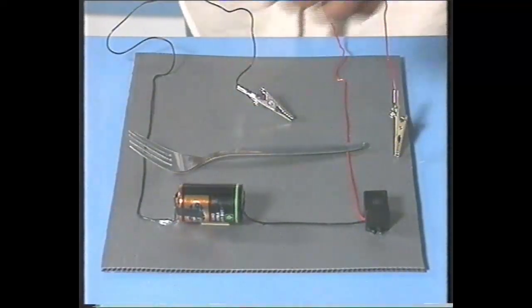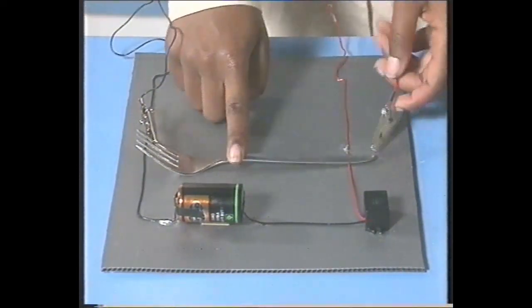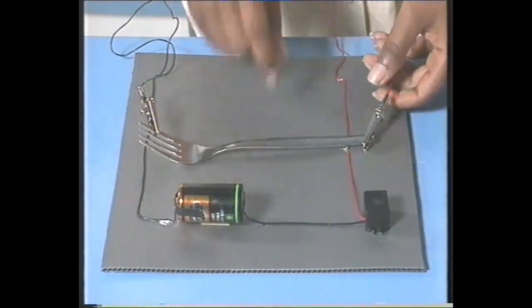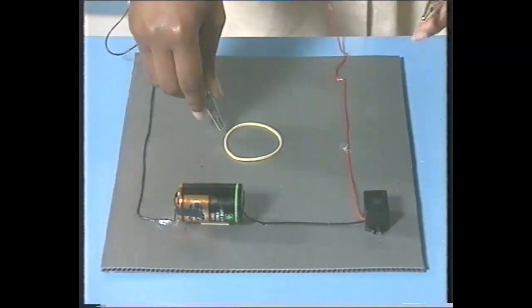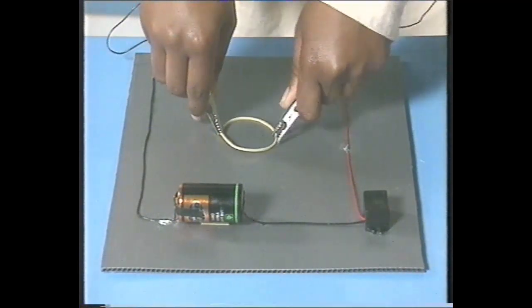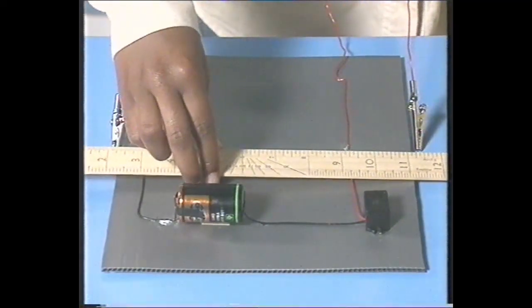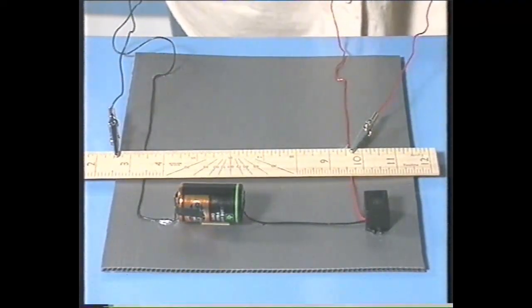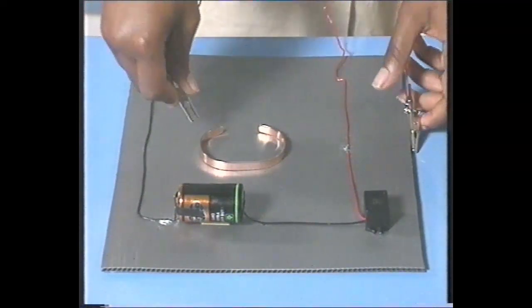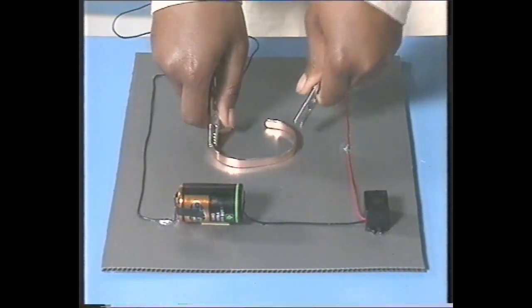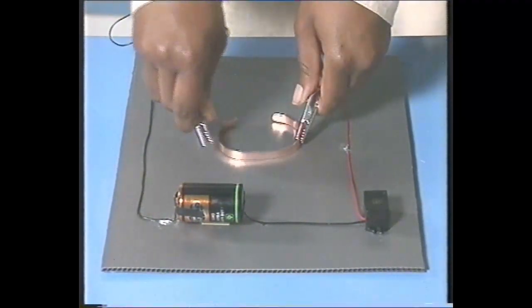Instead of touching the ends of the wire together, I was going to touch them to the ends of something else. If electricity passed through it, it would complete the circuit and make the buzzer buzz. It did when I used a fork, so I knew that the fork conducted electricity. So fork does conduct. I tried a rubber band next. I predicted that it wouldn't conduct electricity. I was right. I predicted the same about a wooden ruler. I was right again. Wood didn't conduct electricity. Next, I tried a copper bracelet. I predicted that electricity would pass along it. And it did. Copper did conduct electricity.